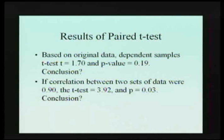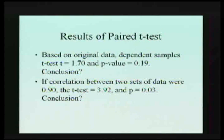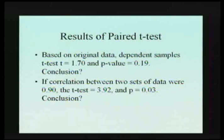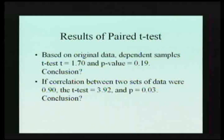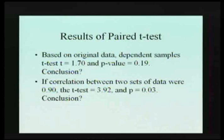Based on these values, we get a t value of 1.70, and the p value is 0.19. So what do we conclude? Is there a significant improvement in these people or not? The p value is 0.19, which is above 0.05, so we conclude it doesn't go below the point of no return — there's no significant difference between these two sets of measures. So basically, there's no improvement.